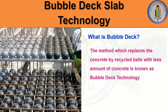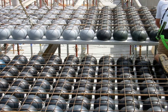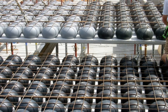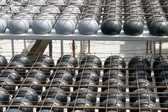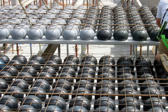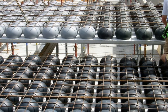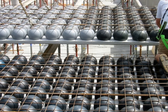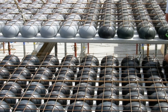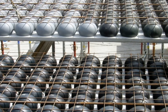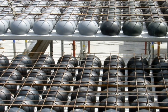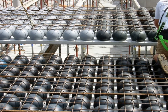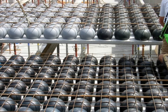Bubble deck technology is the method which replaces concrete with recycled balls using less concrete. The actual construction of bubble deck incorporates a biaxial slab — meaning two wire grids rest on a ball. These grids are placed between slabs of concrete with numerous balls closely arranged in an appropriate grid form. Virtually, all concrete from the middle of a floor slab — which performs no structural function — is eliminated, dramatically reducing structural dead weight. Highly dense polyethylene (HDPE) hollow spheres replace the ineffective concrete in the center of the slab.